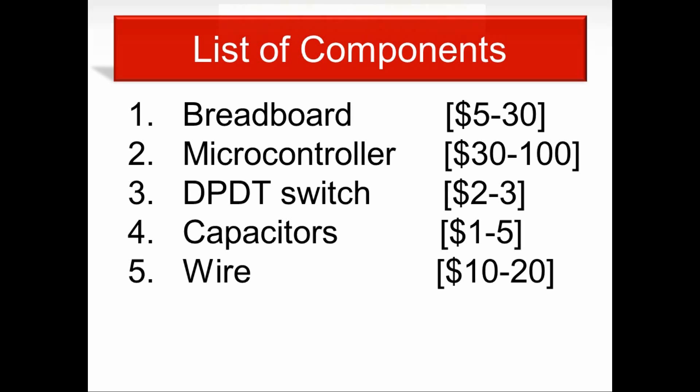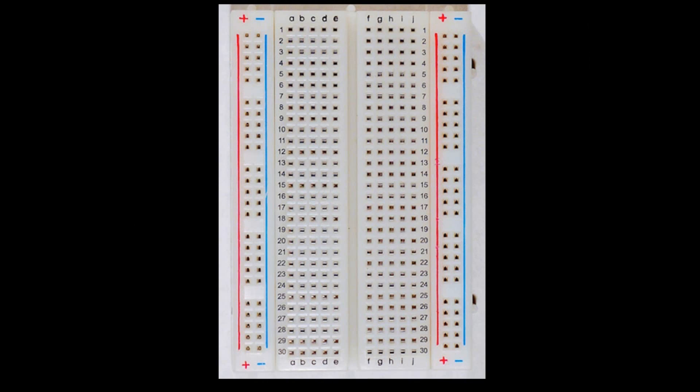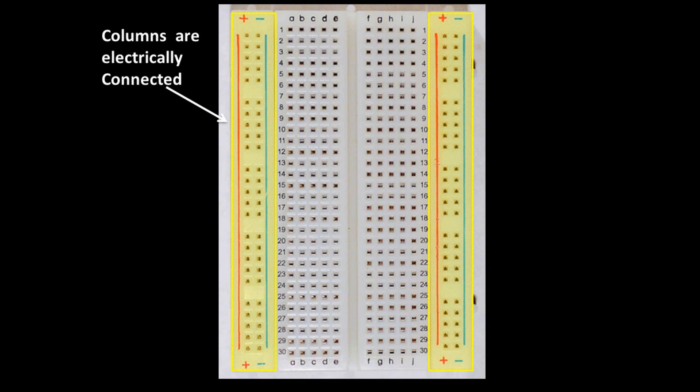As you can see here, we have the breadboard, which is the foundation of your circuit. It is comprised of columns which are electrically connected, as well as rows which are electrically connected. It's good to allocate your columns to certain electrical sources beforehand, such as your power source or your ground.